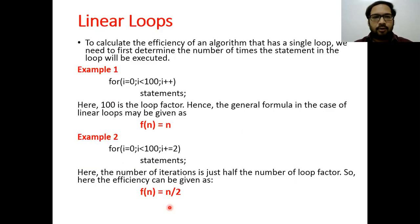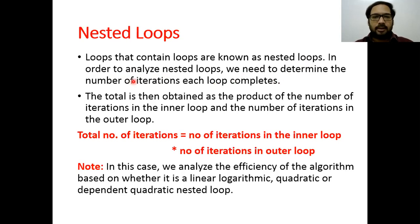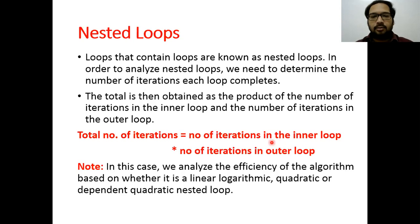So to summarize: in a linear loop iterating 100 times, efficiency is n. When iterating n/2 times, efficiency is n/2. When the loop variable is multiplied or divided, the loop runs far fewer iterations and efficiency is log n. Now the third case is nested loops — loops that contain loops. To analyze them, we multiply the number of iterations of the inner loop by the number of iterations of the outer loop.